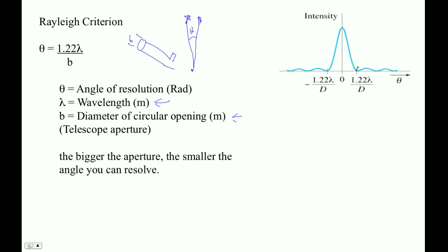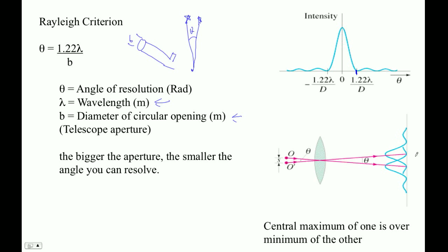And the notion is that this minimum right there, if you superpose another star's image on that minimum, then it can be resolved. So here's this peak falls right above that minimum. This peak falls above that peak's minimum.